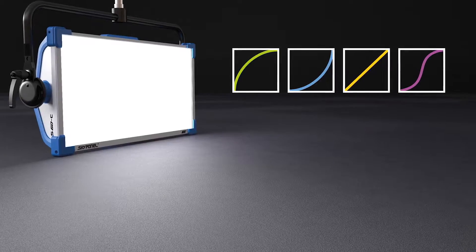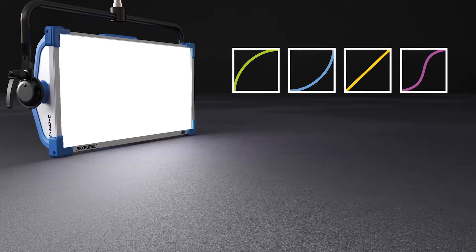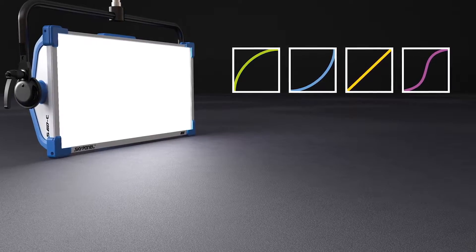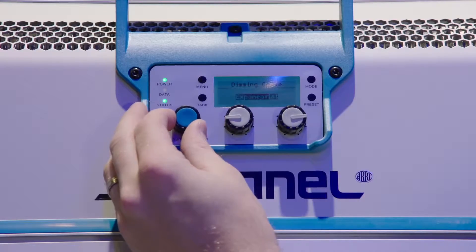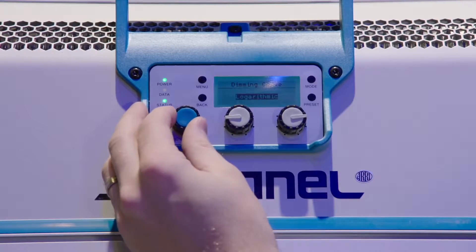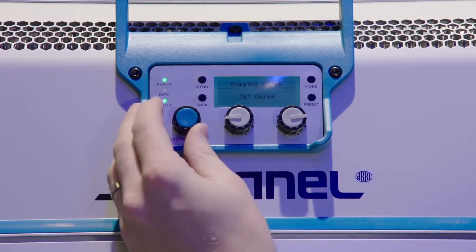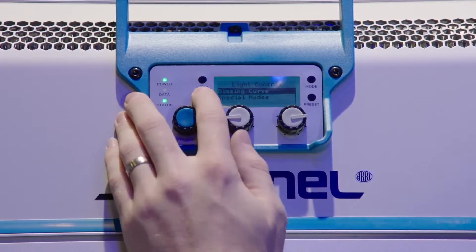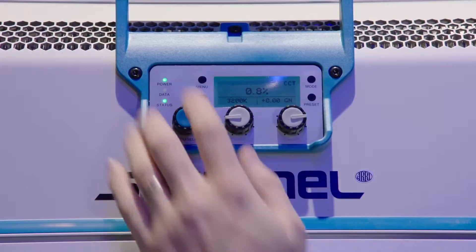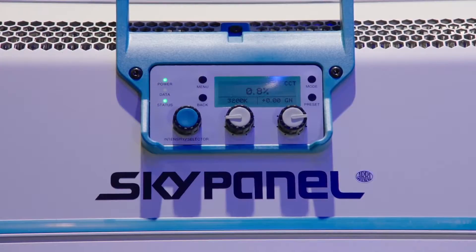We also have the option to select from four different dimming curves. You can choose between an exponential dimming curve, a logarithmic curve, a linear, and an S curve. Depending on how you want to control the light and how it's dimming, you can select one of those curves and it will affect the fixture system wide.